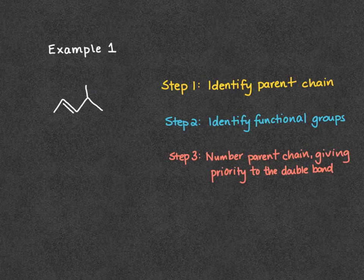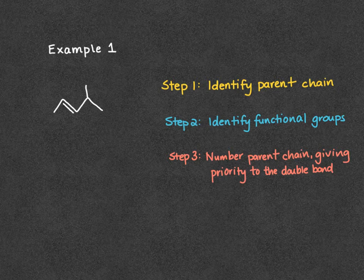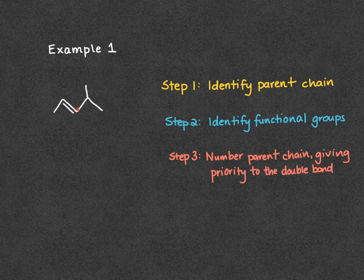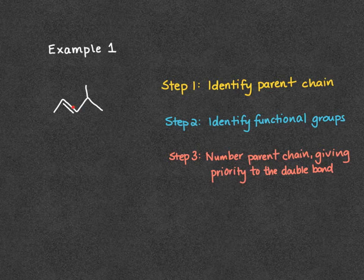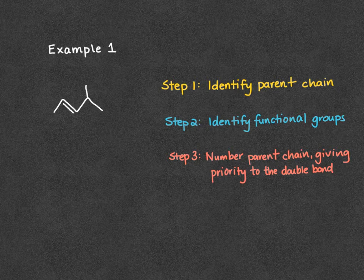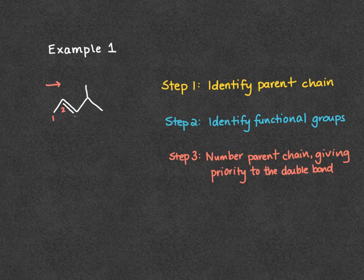Next, we're going to number the chain, giving priority to the double bond — meaning our double bond gets the lowest possible number it can have. If we number from left to right, our double bond starts on carbon 2 and ends on carbon 3. If we number from right to left, our double bond starts on carbon 3 and ends on carbon 4. So we number from left to right so that our double bond has the lowest number it can possibly have, which is 2.